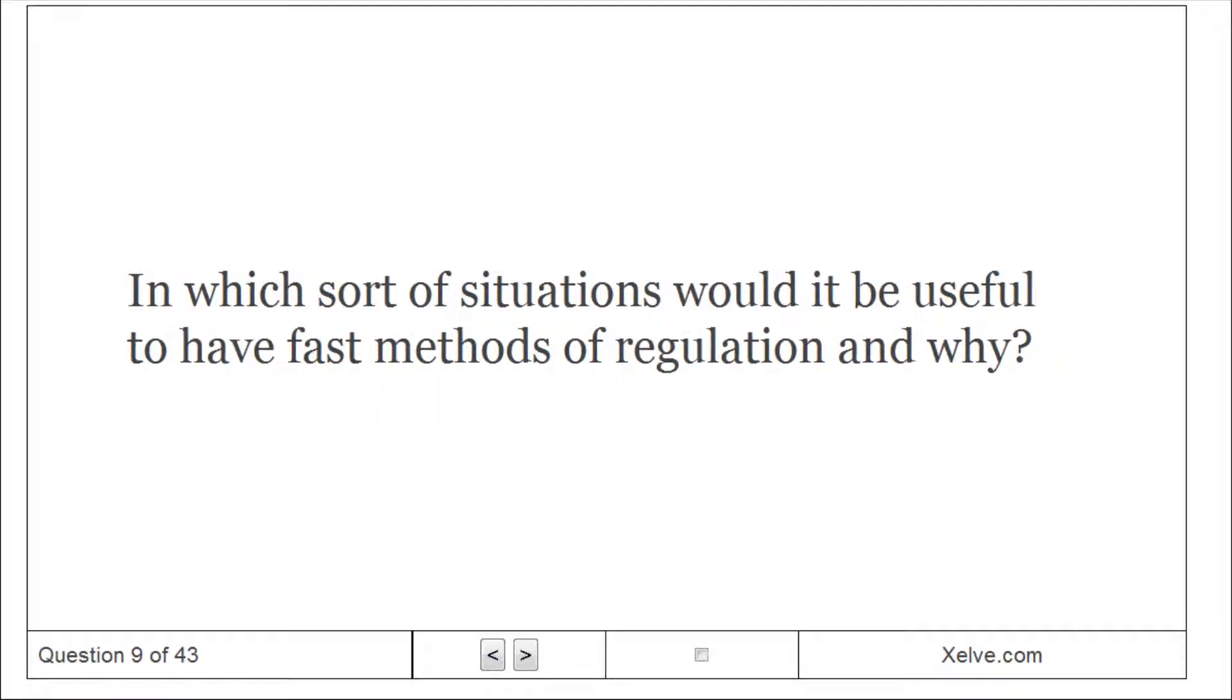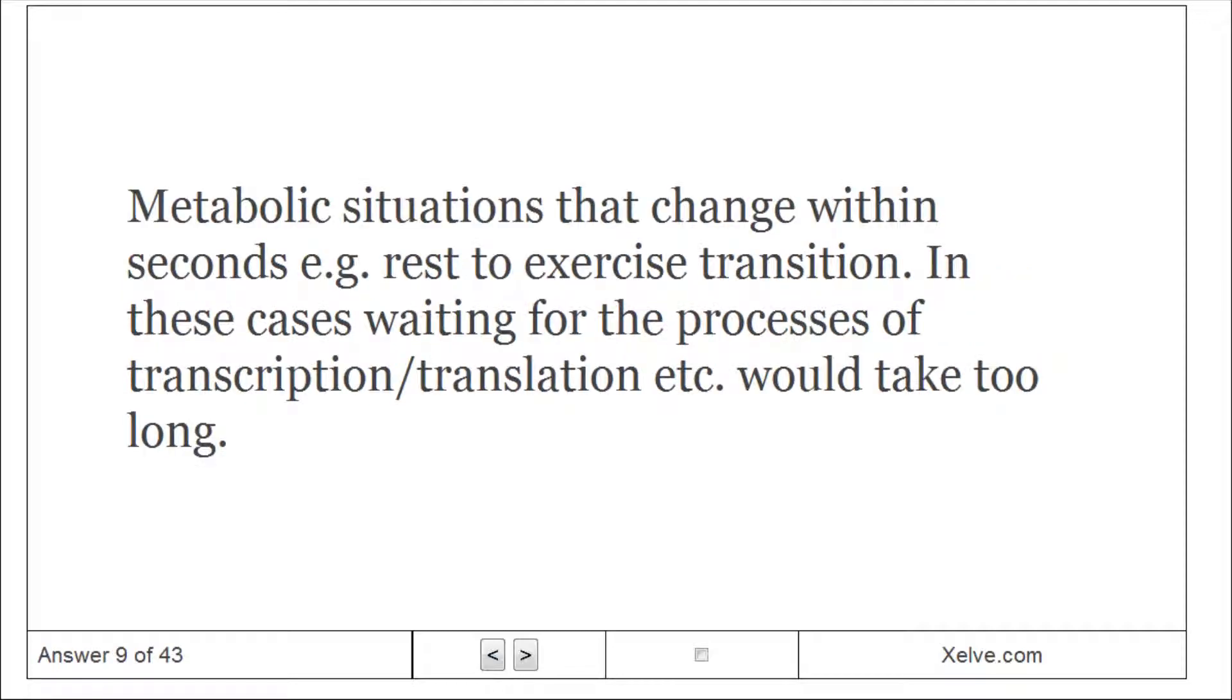In which sort of situations would it be useful to have fast methods of regulation and why? Metabolic situations that change within seconds e.g. rest to exercise transition. In these cases, waiting for the processes of transcription, translation, etc. would take too long.